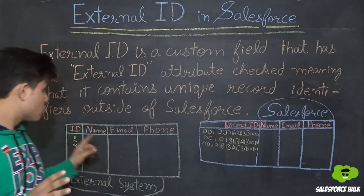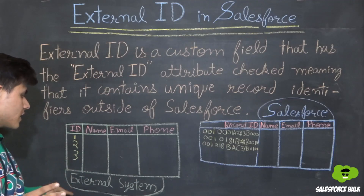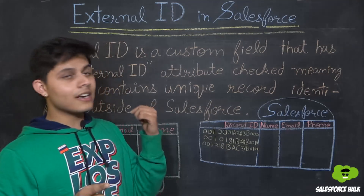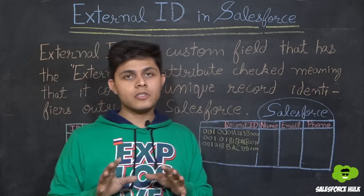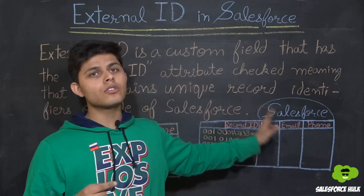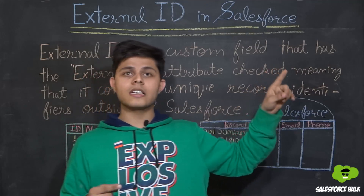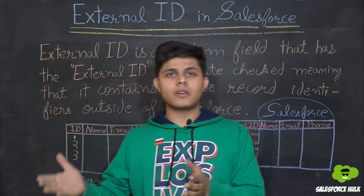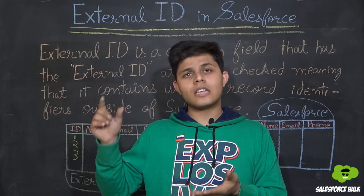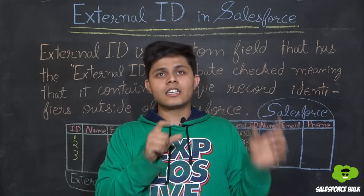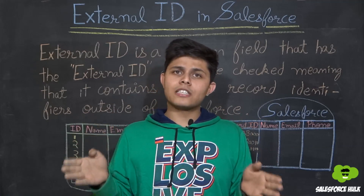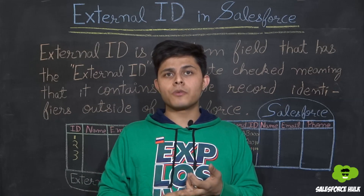But what if you do not have a record ID available in your external system? In that situation, external ID comes into the picture. You have to check any custom field in your Salesforce org as an external ID, so that when updating or upserting records from your external system, you can select that field as a unique identifier and the update or upsert process begins based on it.